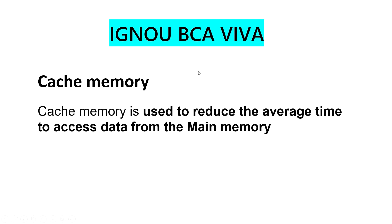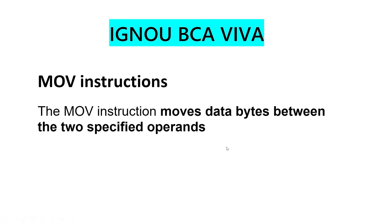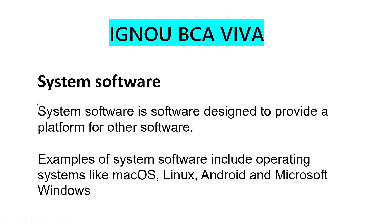Cache memory is used to reduce the average time to access data from the main memory. MOV instruction moves the data byte between the 2 specified operands.